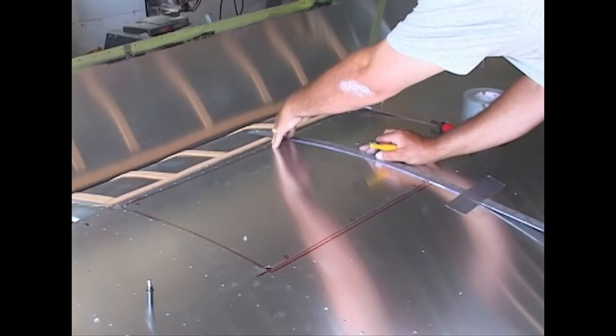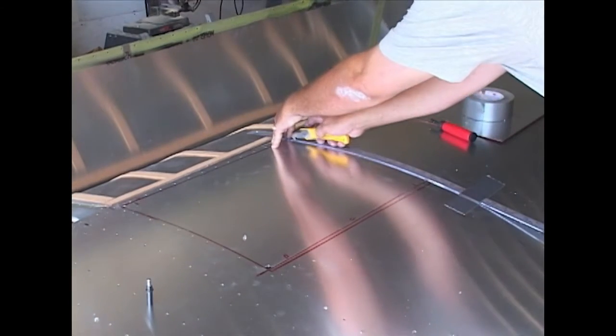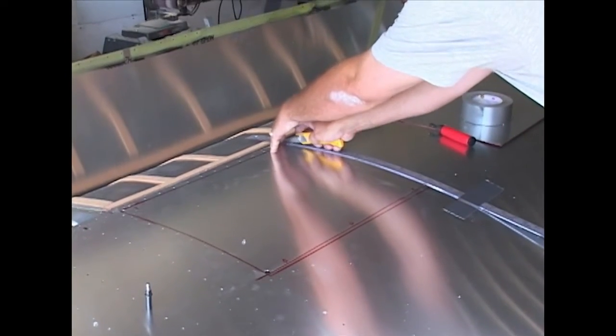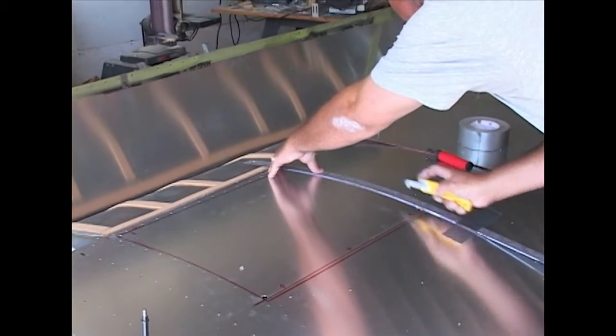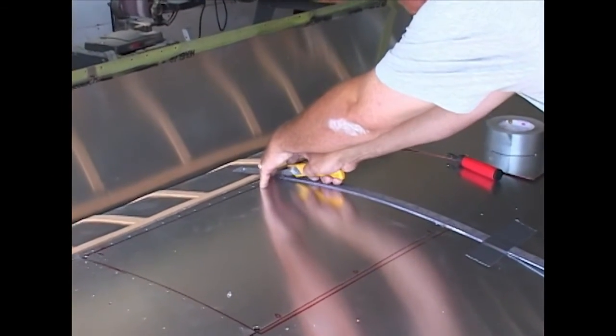Notice the ruler also protects the good skin. In case we slip with the knife, we will not damage the good side of our cut.